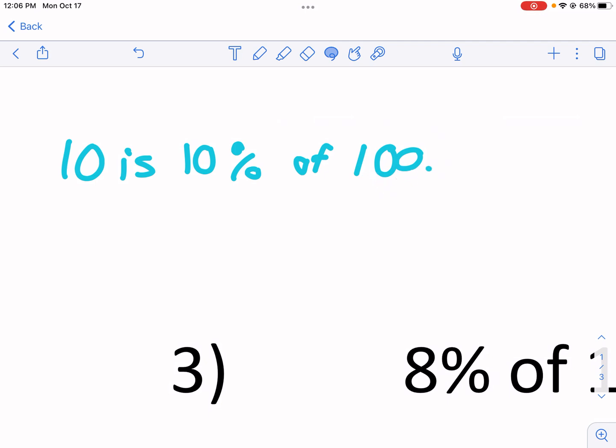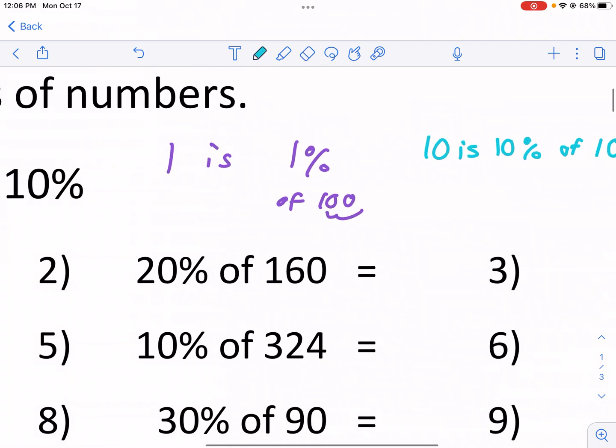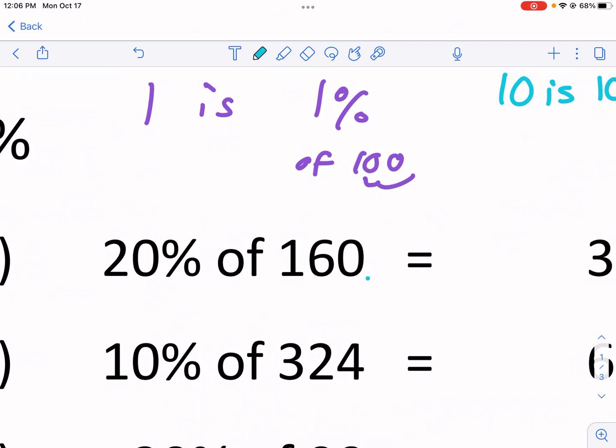For just 10 I get just one time over. So 10 is just one over. So if I want to make it 10%, I would just move it one over. So 16 is 10% of 160. But again I don't want that. I want 20%. So guess what? I just need to multiply it by 2.